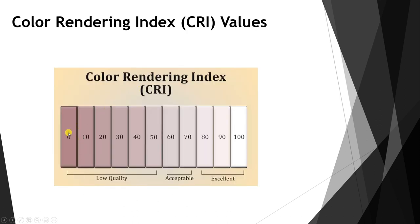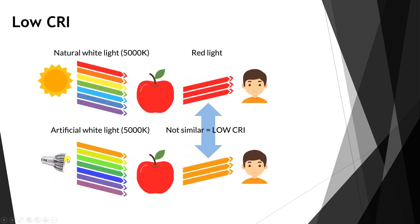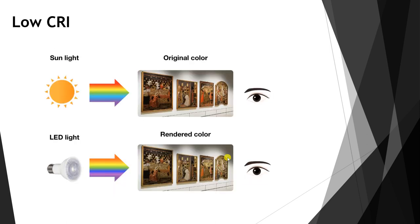The Color Rendering Index ranges from 0 to 100. A value of 80 to 100 is considered excellent; 60 to 79 is acceptable; and less than 60 is low quality light. Natural white light gives us the real color of the object — for example, a red apple — because it has all frequencies across the color ranges. A light source with a low CRI does not have all the wavelengths, giving a poor representation of the real color.